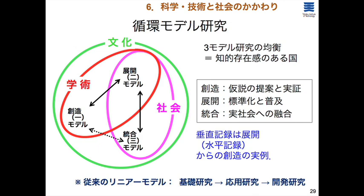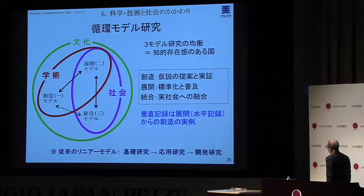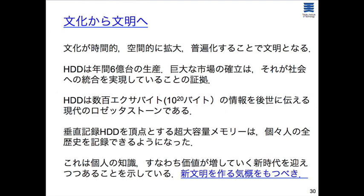Something I thought deeply about from around 1990–2000: while pursuing perpendicular recording research during my time on the Science Council of Japan, I came to believe that the conventional linear model of basic research → applied research → development is wrong. Rather, a circular model of 'creation, deployment, and integration' is more apt. Creation means proposing and verifying hypotheses; deployment means standardization and dissemination; integration means fusion with real society. Research advances through circulation of these stages — the linear model leads to dead ends.